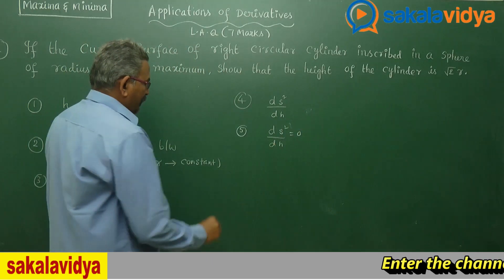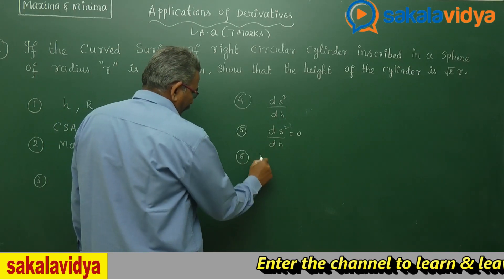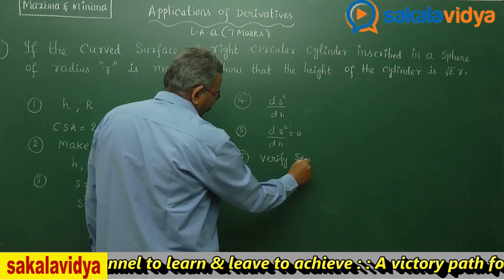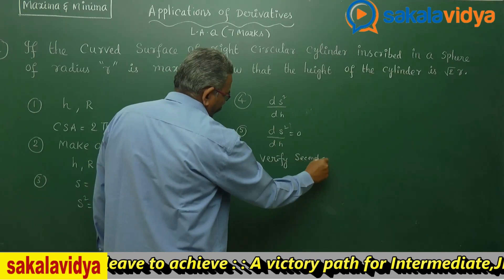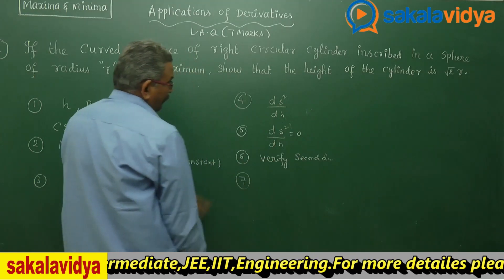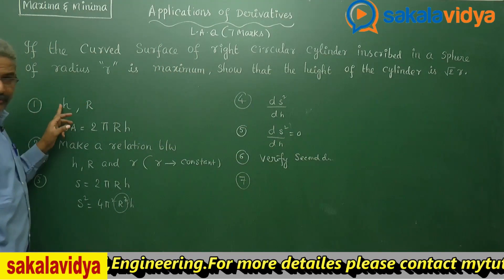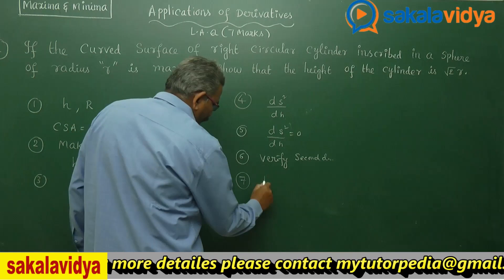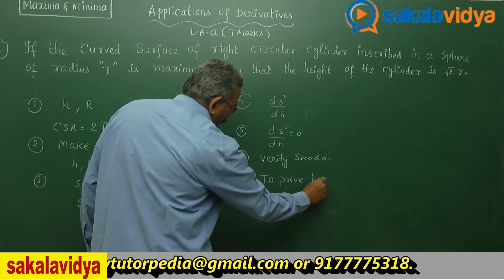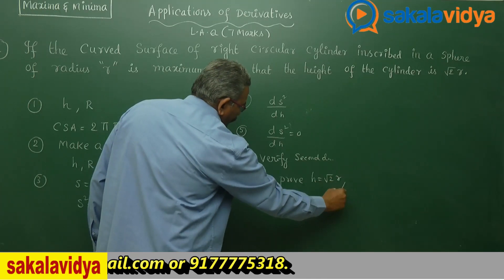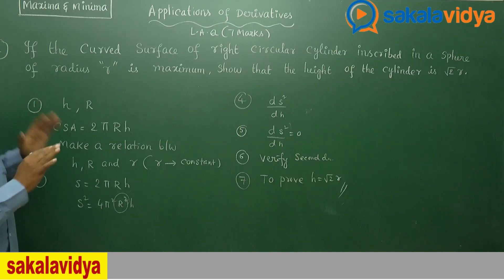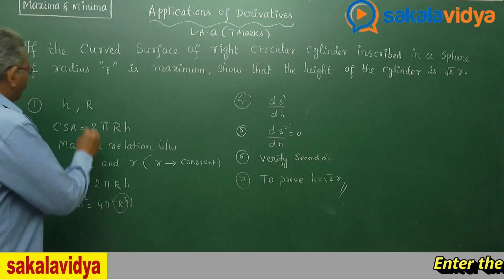Next we have to verify using the second derivative test. Then we need to prove the height of the cylinder — that is, prove h = √2r. This is what has to be proved. Generally we make a plan like this, and this is the plan.